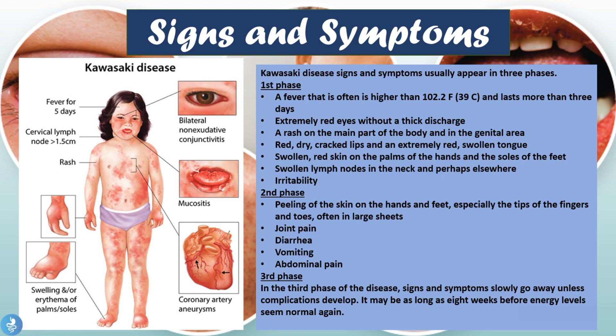In the second phase of the disease, there is peeling of the skin of the hands and feet — especially the tips of the fingers and toes — often in large sheets. These children may also suffer from joint pain, diarrhea, vomiting, and abdominal pain.